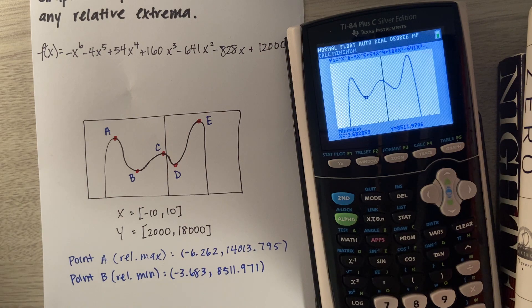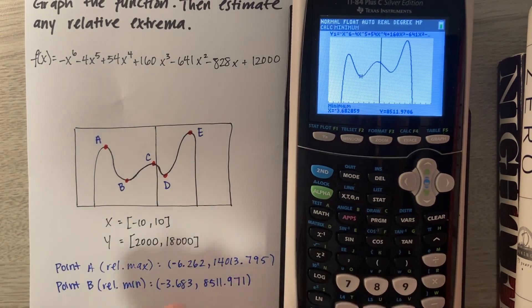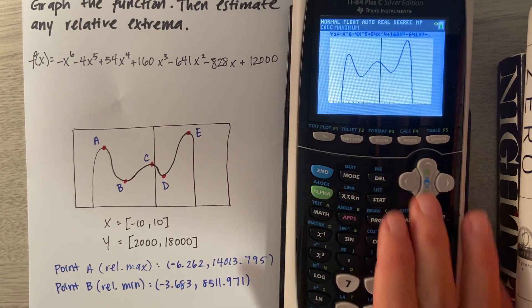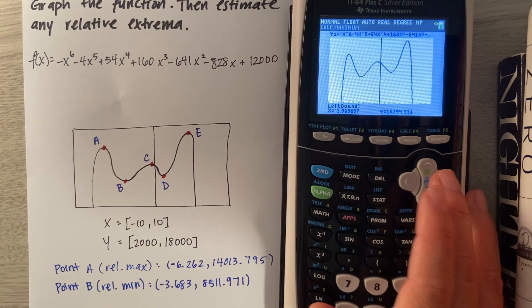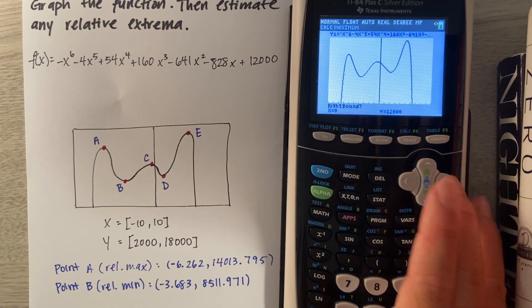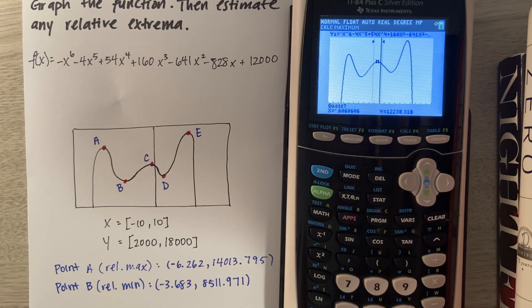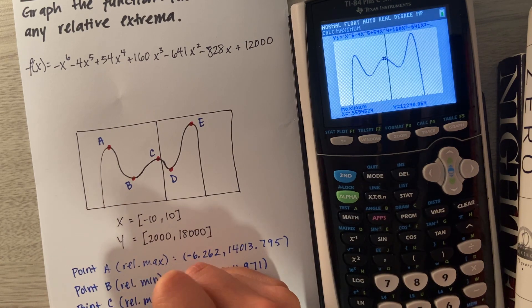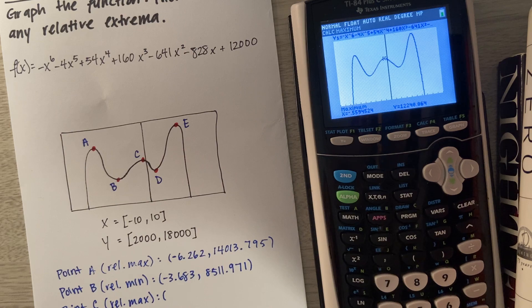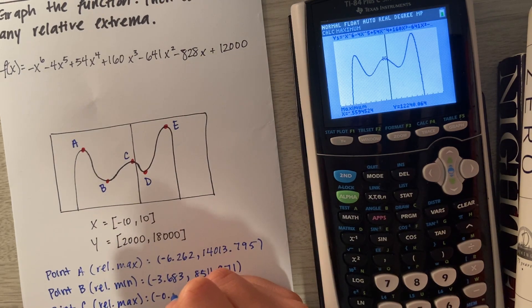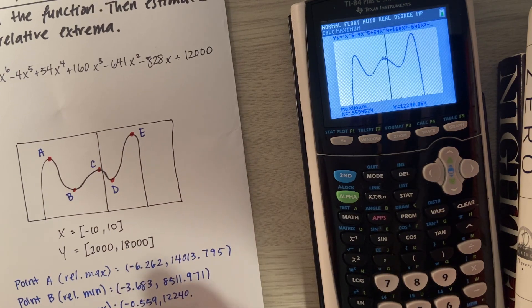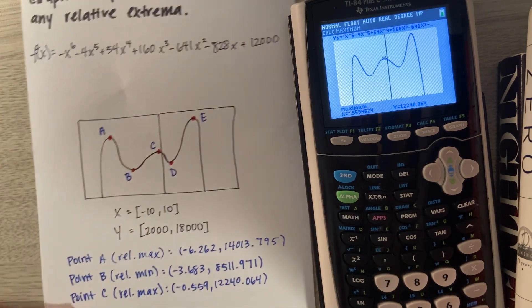We're going to keep going with this process. Now hopefully you've gotten the hang of it. We're going to do point C, which is a relative max. Second, Calc, find Max. We got left bound, right bound, and our best guess. Perfect. Point C is a relative max. We have -0.559, 12,240.064.